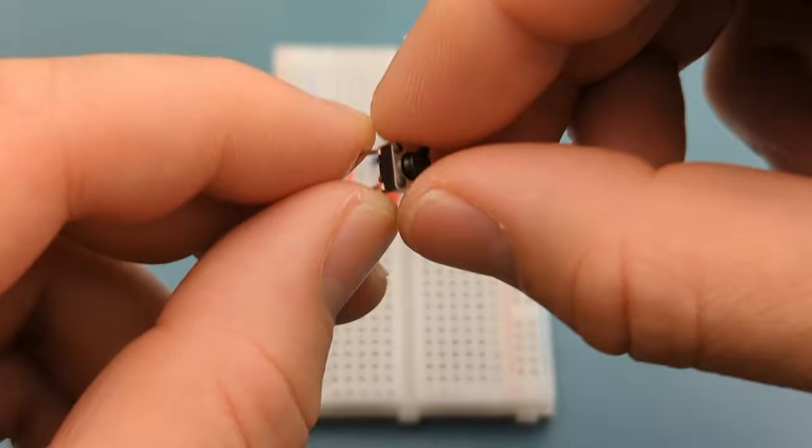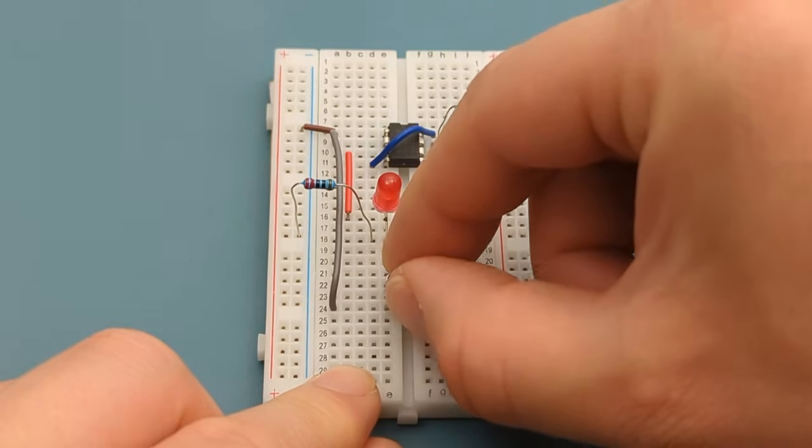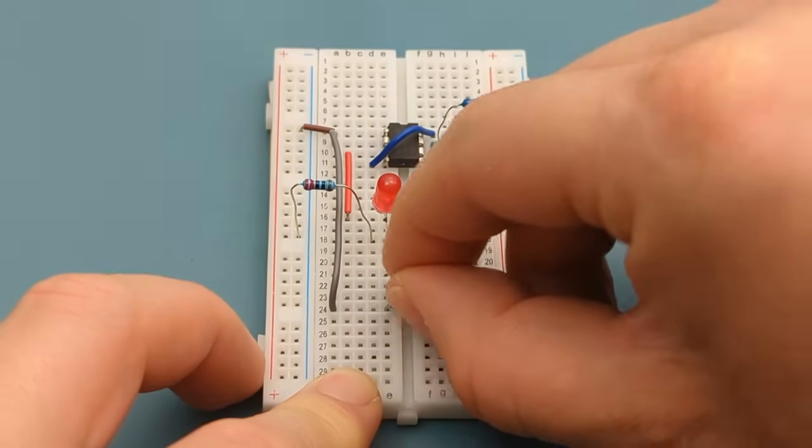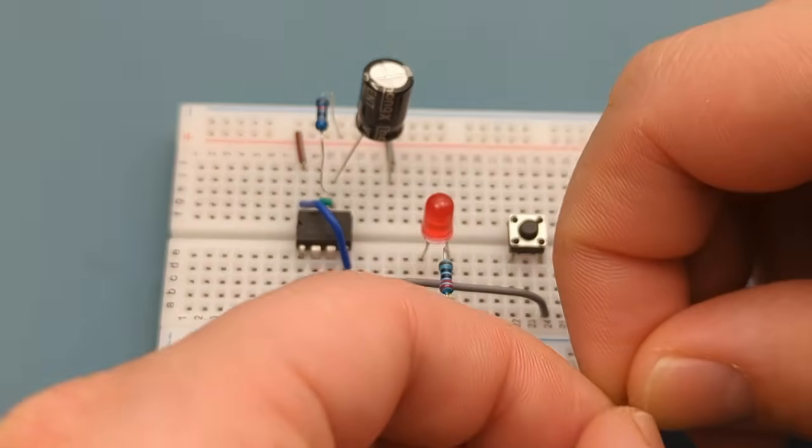Insert the latch switch in the middle of the breadboard. The bottom leg is in the same row as the jumper wire. Insert a jumper wire in the same row as the top leg of the switch and the negative rail.